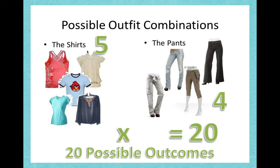When we are trying to decide what to wear, we can also use probability. We have all of these lovely shirts and we have pants — five different shirts and four different pants. How do we know how many different outfits we can get? It's very simple: we take all the shirts on one side and all the pants on the other side and multiply them together. So we multiply five by four and we get twenty — twenty possible outcomes. This is one of the rules: we multiply together.